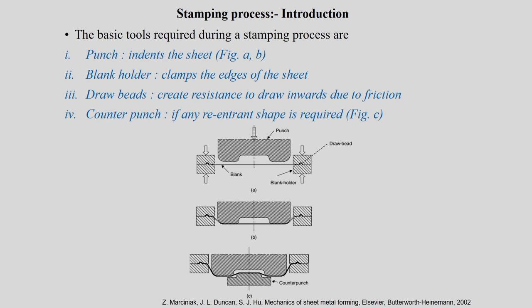The basic tools required for stamping are conventional but require intricate shapes. As shown in diagrams A, B, and C from the textbook, the setup has a punch, a blank or sheet, a blank holder, a die, and draw beads at certain locations — it is a sectional view. Initially the punch is not touching the sheet; there is a gap, and then the punch moves down and stretches the sheet on its surface.